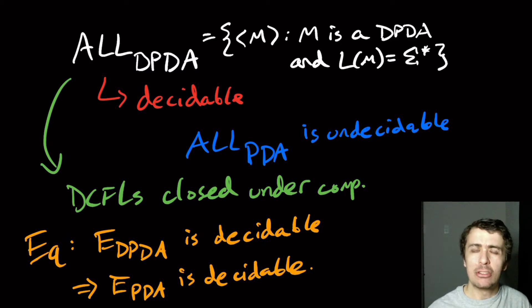It would be really interesting to know what problems are undecidable for DPDAs. So, there's a very, very long proof, complicated proof, that shows that EQ_DPDA is decidable.